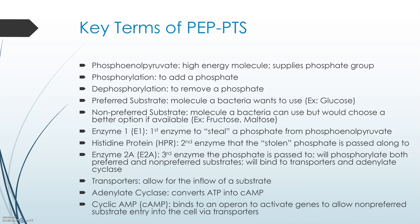Transporters allow for the inflow of a substrate, both preferred and non-preferred. Adenylate cyclase converts ATP to cAMP when it is being utilized. Cyclic AMP, or cAMP, binds to an operon to activate genes that allow non-preferred substrates entry into the cell via those transporters.